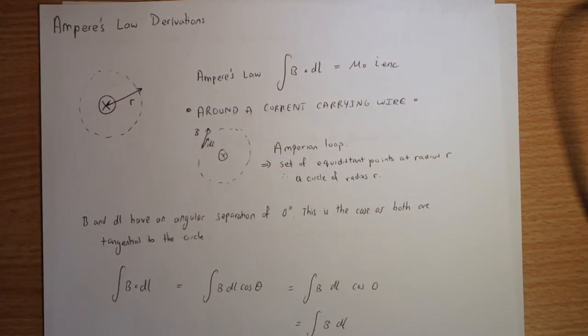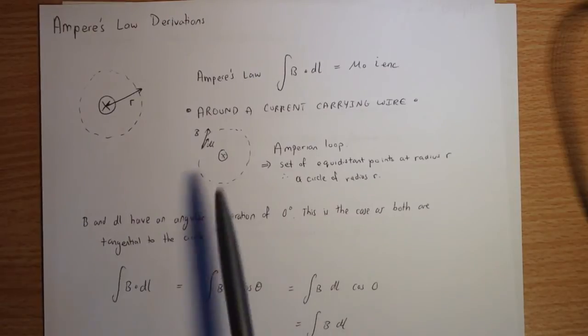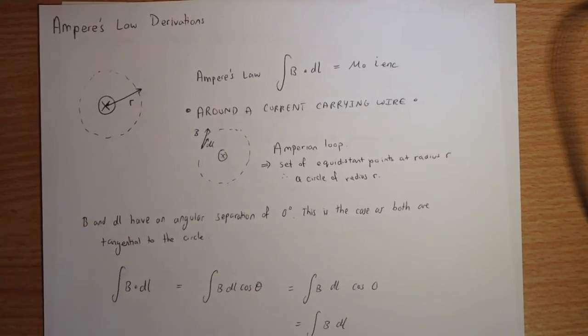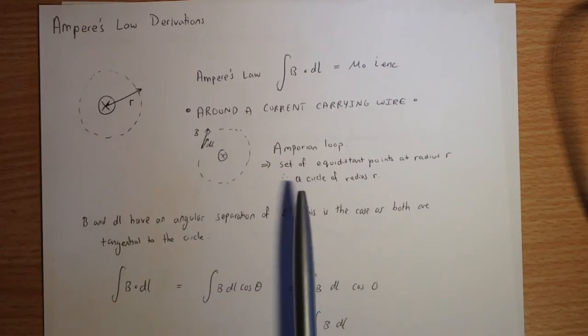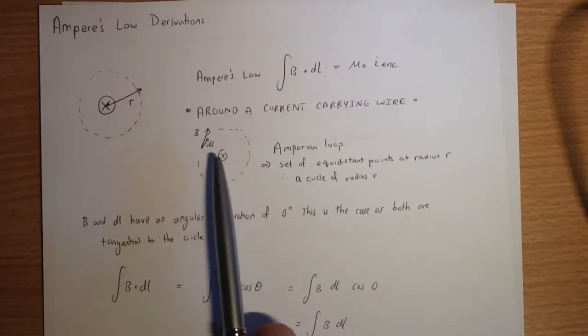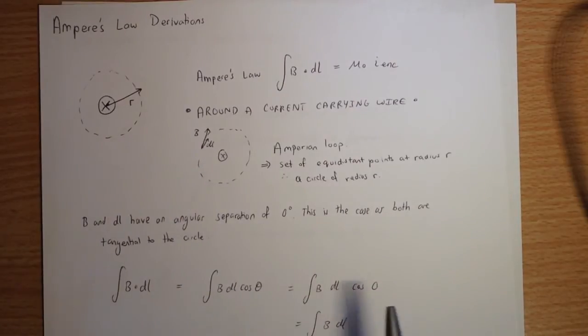So the first thing we do when we set up an Ampere's law problem is we set up an Ampereian loop. And in this case, we're just going to be looking at two Ampereian loops today in this video with two derivations. So essentially, for this Ampereian loop, we're setting up a circle at some radius r from the current carrying wire, and it's essentially a set of equidistant points from the current carrying wire. So it's going to be a circle of radius r.